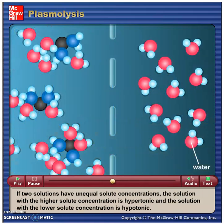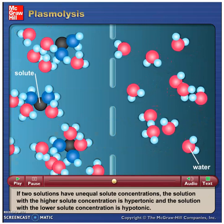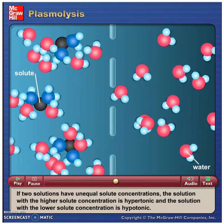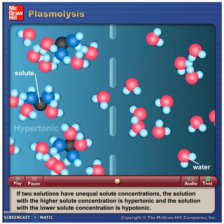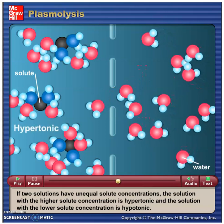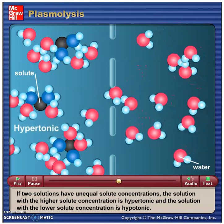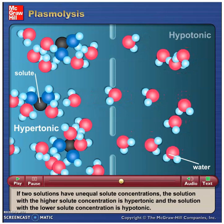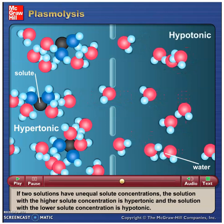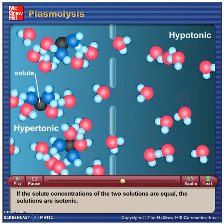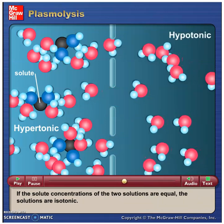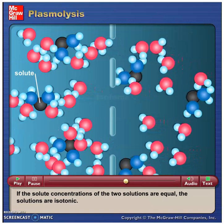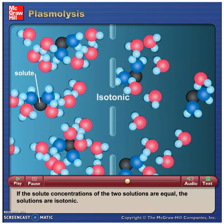If two solutions have unequal solute concentrations, the solution with the higher solute concentration is hypertonic, and the solution with the lower solute concentration is hypotonic. If the solute concentrations of the two solutions are equal, the solutions are isotonic.